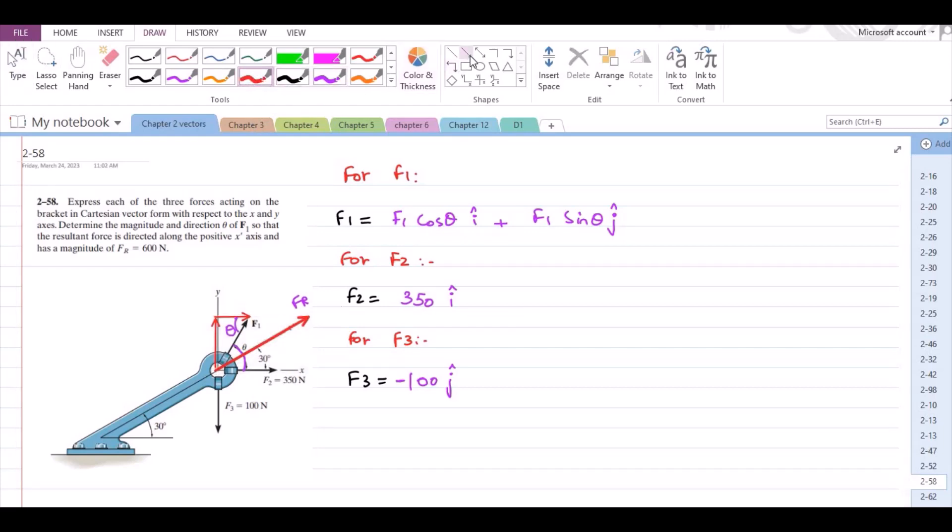Now this FR has two components, one vertical component and one horizontal component. Now the force FR can also be expressed in terms of Cartesian vector form. For FR we have FR equals FR cos theta i plus FR sin theta j.